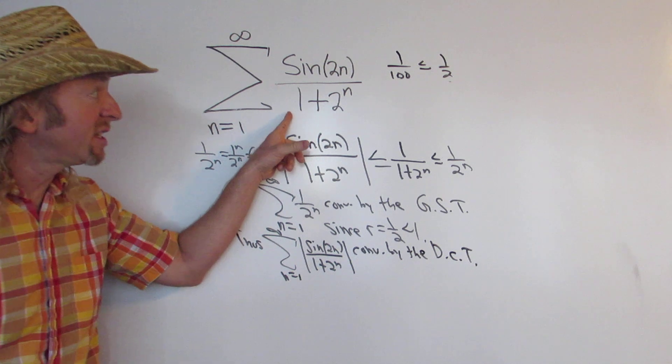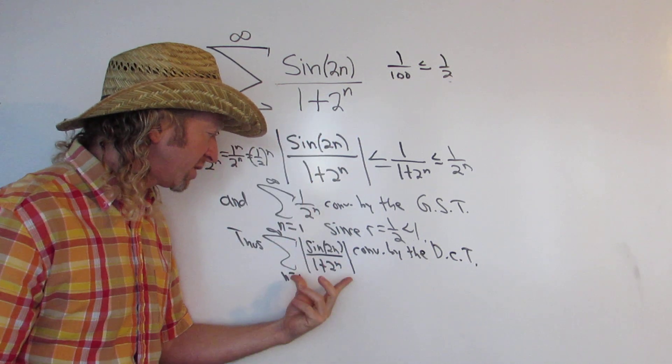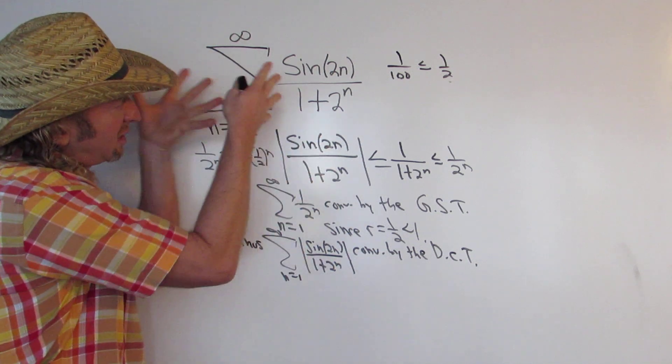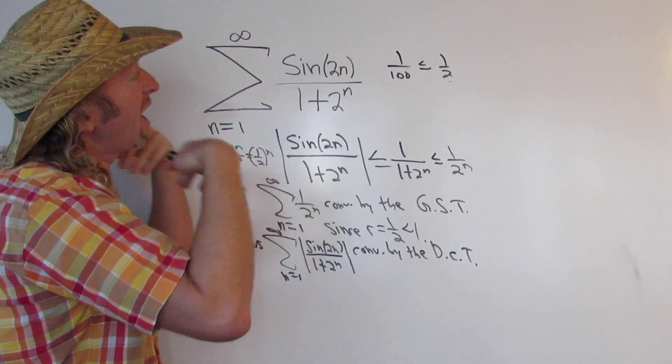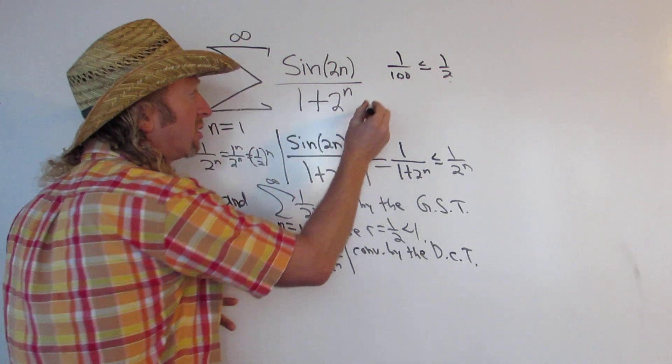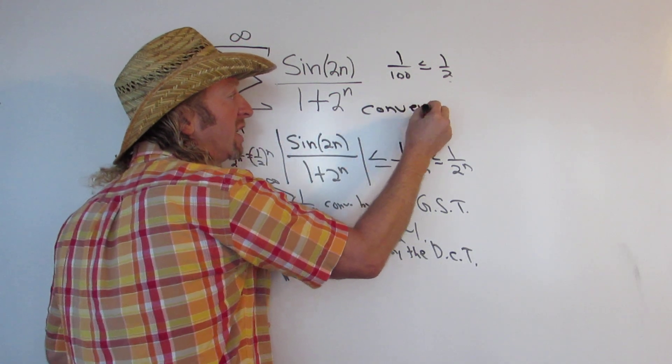That means that our series absolutely converges. Whenever this converges, then we have what's called absolute convergence. So we say that this series converges absolutely. And anytime you have a series that converges absolutely, it also converges. So the answer in this case would be convergence.